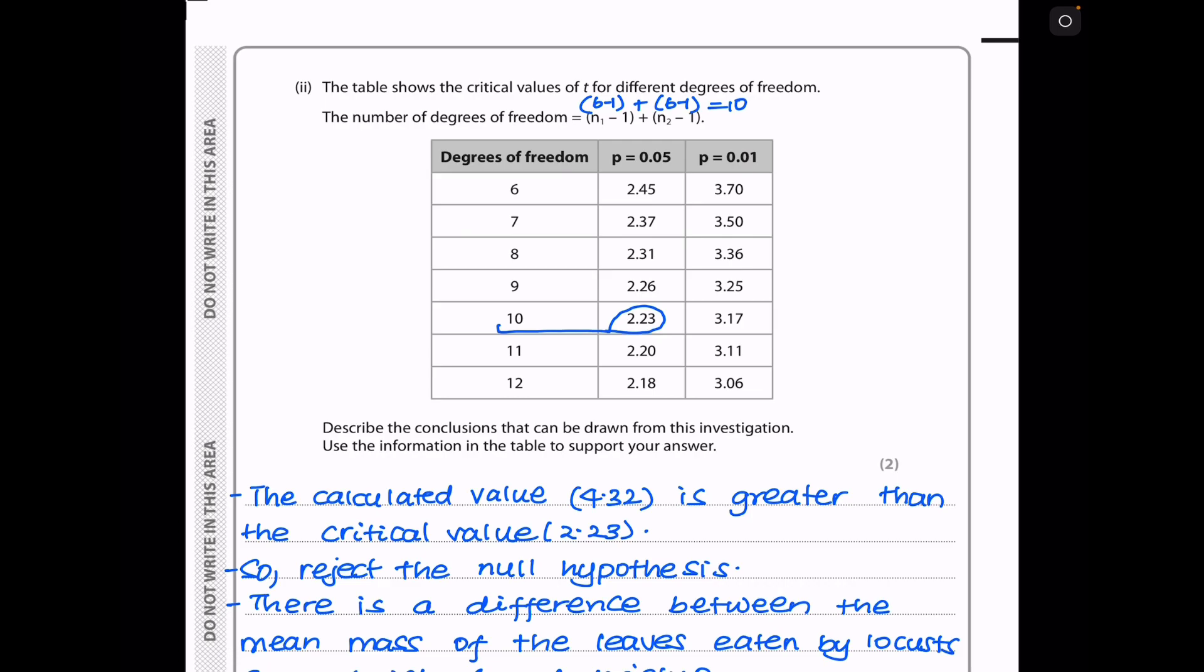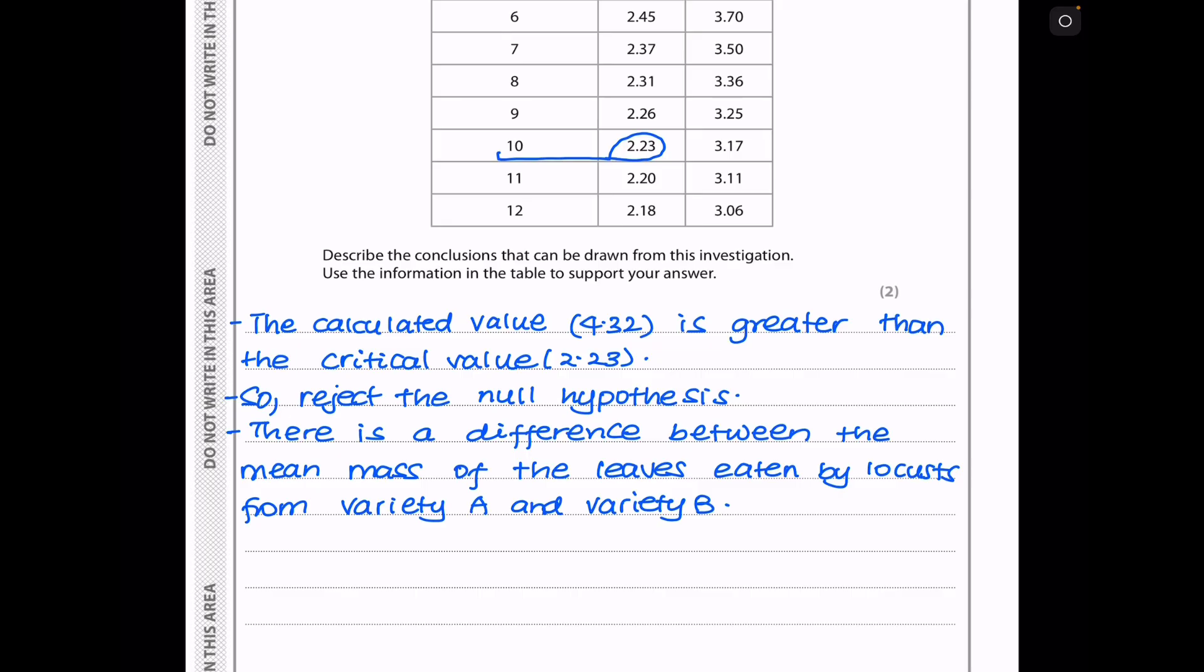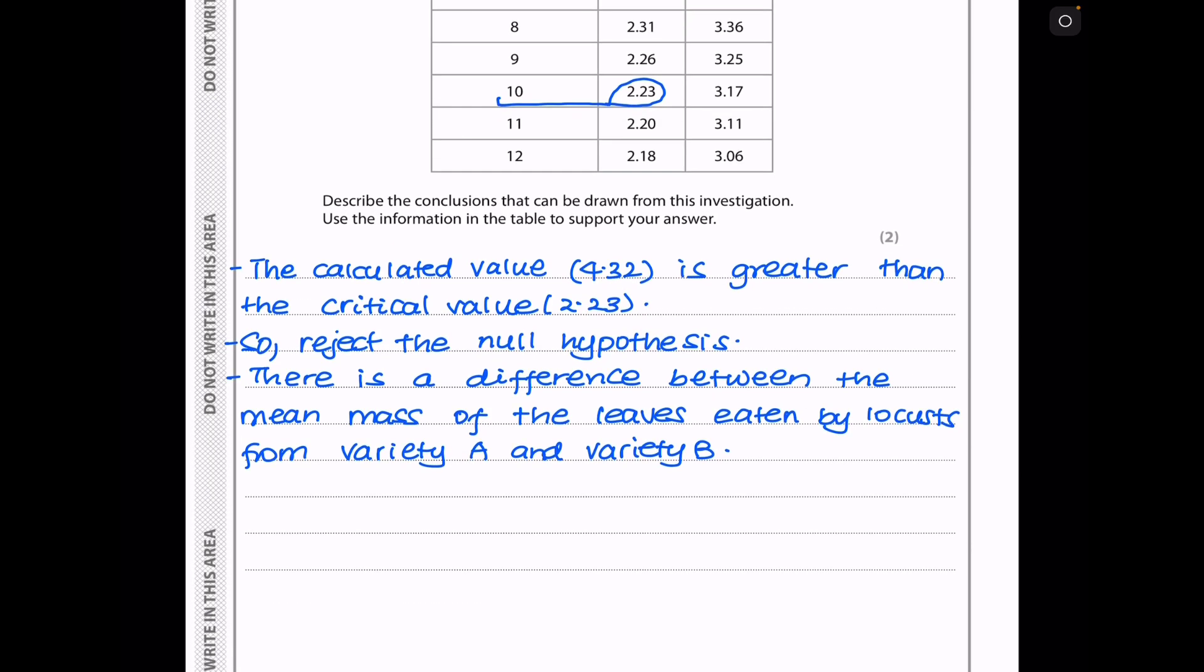The next part says the table shows the critical values of t for different degrees of freedom. The number of degrees of freedom can be calculated using that. So we know from the experiment there were six values. So 6 minus 1 plus 6 minus 1 gives us 5 plus 5, which is 10. So we're going to get the results at degree of freedom equal to 10, which is this one here. And in biology, we collect data at p is equal to 0.05. So the corresponding critical value is 2.23. And down here, they say describe the conclusions that can be drawn from this investigation. Use the information in the table to support your answer. From the table, we can see the critical value is 2.23, while the calculated value is 4.32. Since the calculated value is greater than the critical value, we will reject the null hypothesis. And that means there is a significant difference between the mean masses of the leaves eaten by the locusts from variety A and variety B.